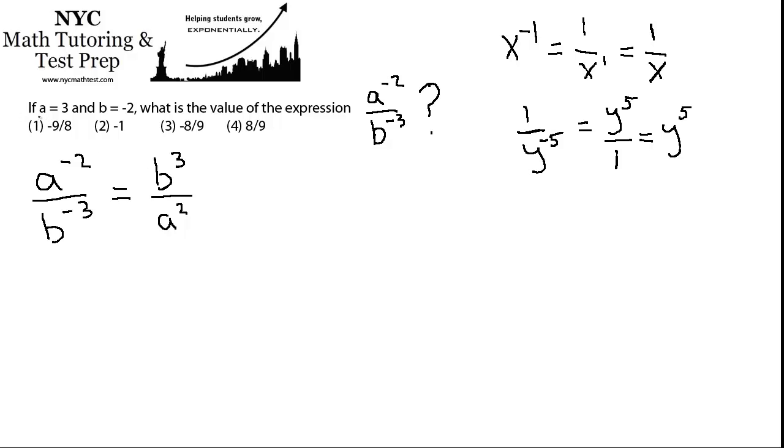We know exactly what a is, because we've been told up here a is 3, and b is negative 2. And if we make that substitution, we can calculate what this equals.